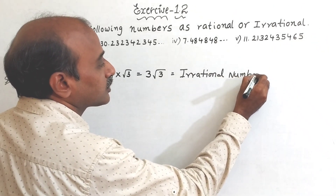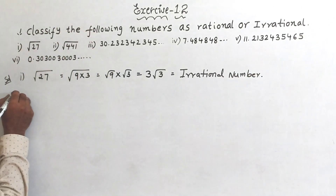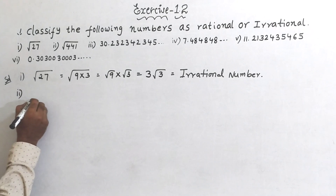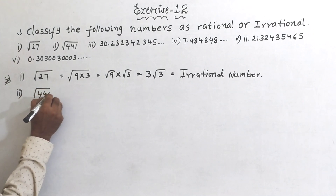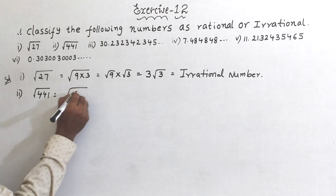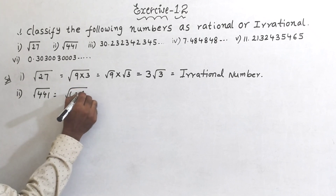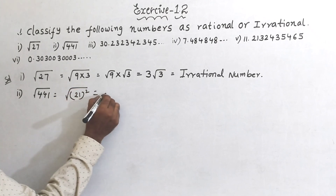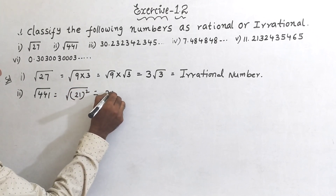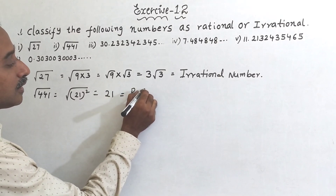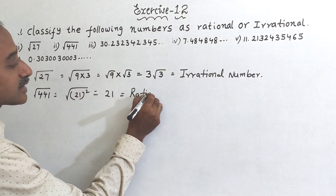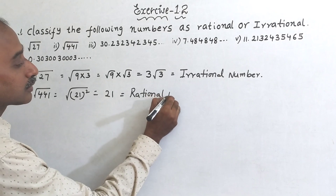Roman (ii): √441. You can write 441 as 21², so √441 = √(21²) — the square root and square cancel — giving 21. So this is a rational number.